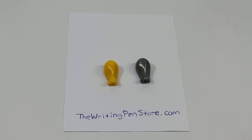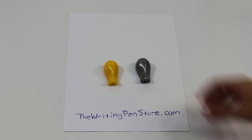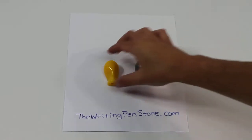In this video for TheWritingPenStore.com we are looking at the Jumbo Pencil Grip. This pencil grip is designed with children in mind to promote the tripod grip. It comes in metallic colors as well as solid colors.